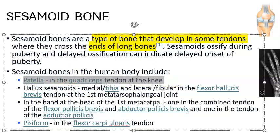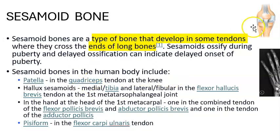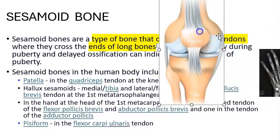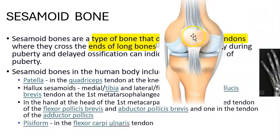The first example is patella — it is a sesamoid bone located in the quadriceps tendon in the knee joint.